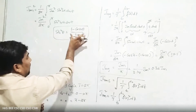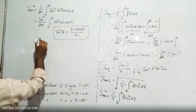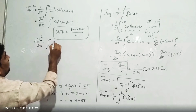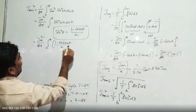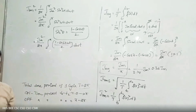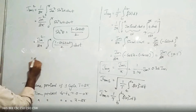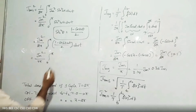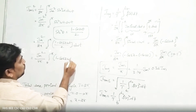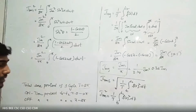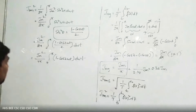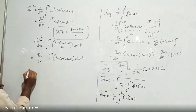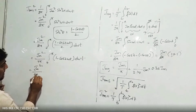Substituting the identity into our equation: I_rms² = Im² by 2π, integration of 0 to π of (1 − cos 2ωt) / 2 d(ωt). The denominator 2 combines with 2π, giving Im² by 4π, integration of 0 to π of (1 − cos 2ωt) d(ωt). We now separate this integration into two parts: the integral of 1 and the integral of cos 2ωt.